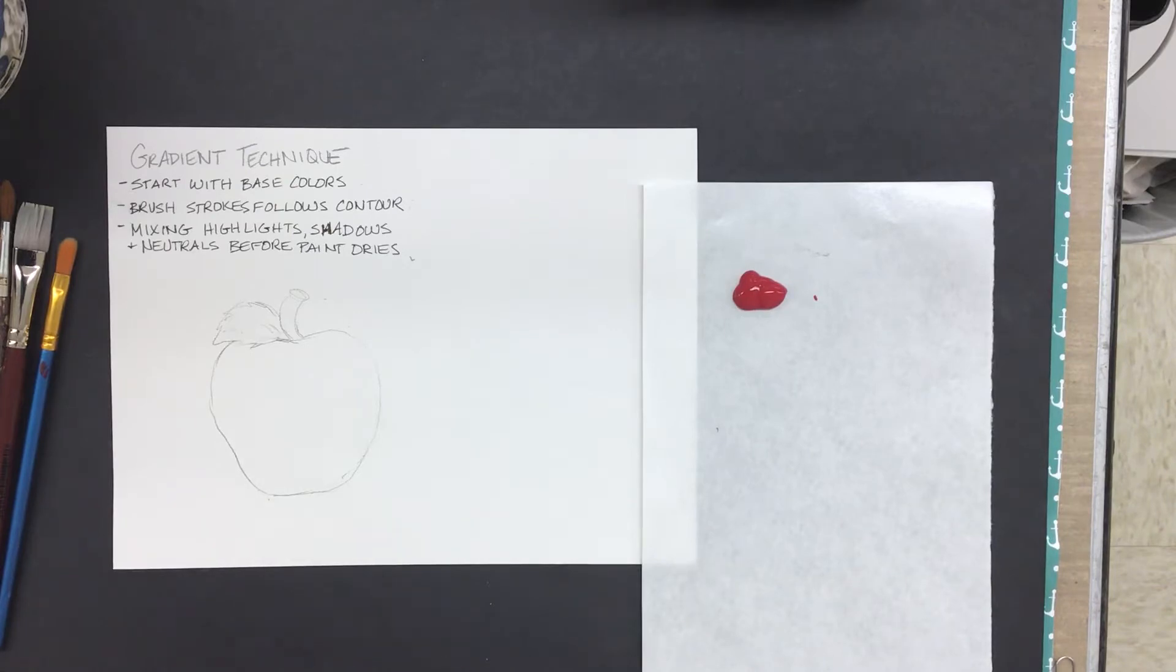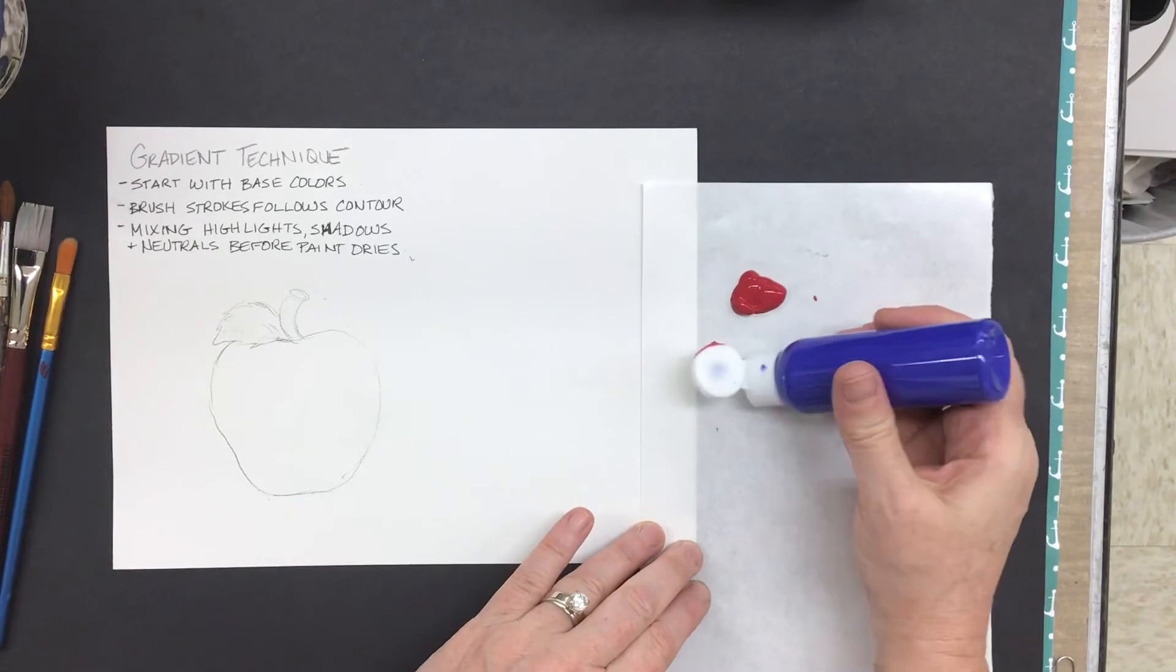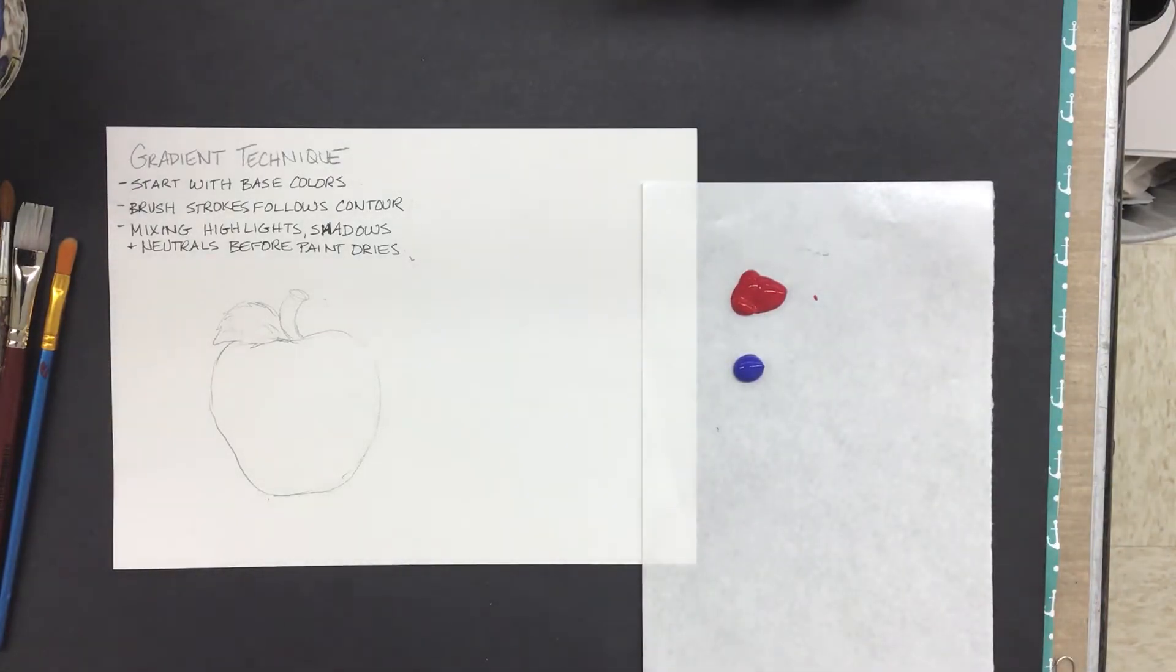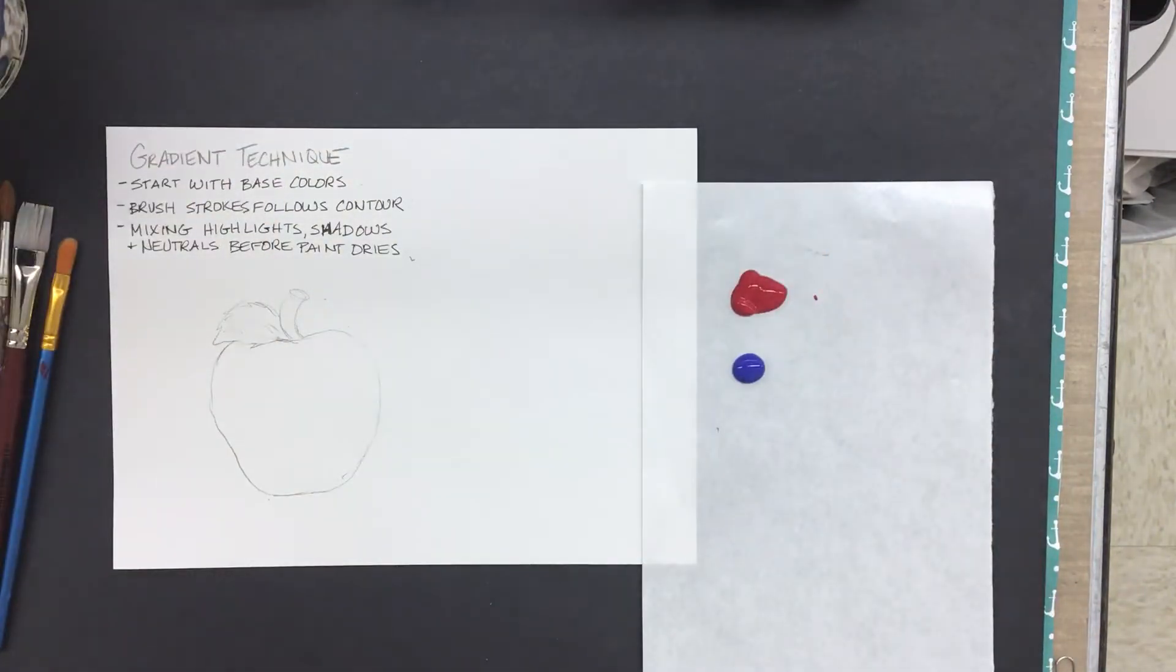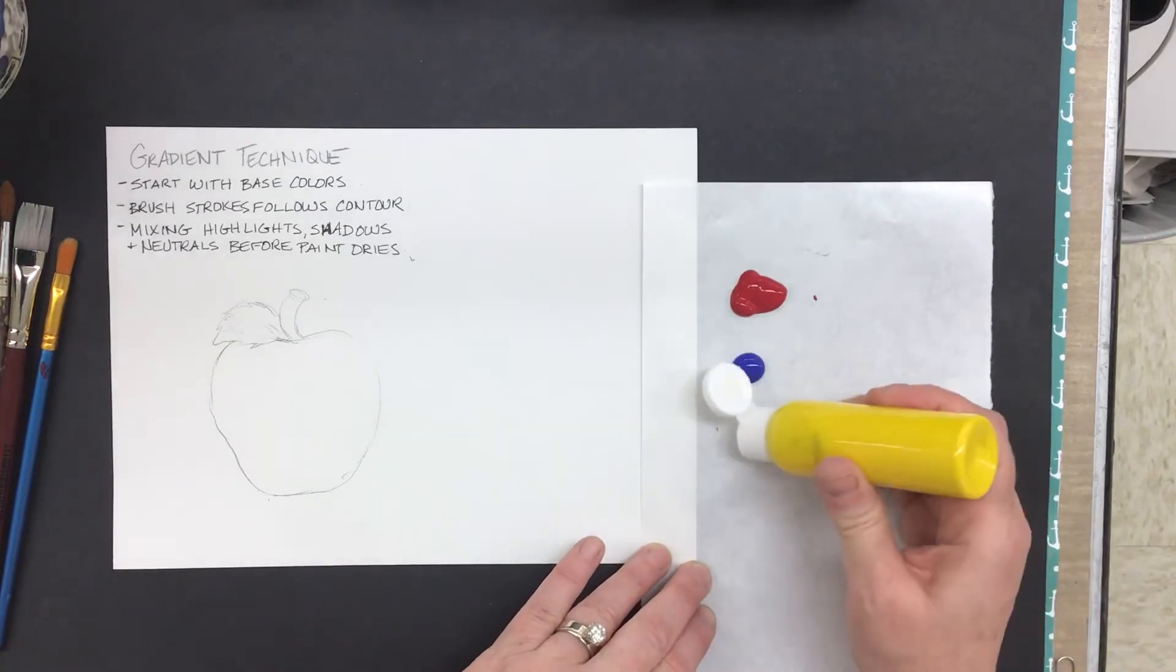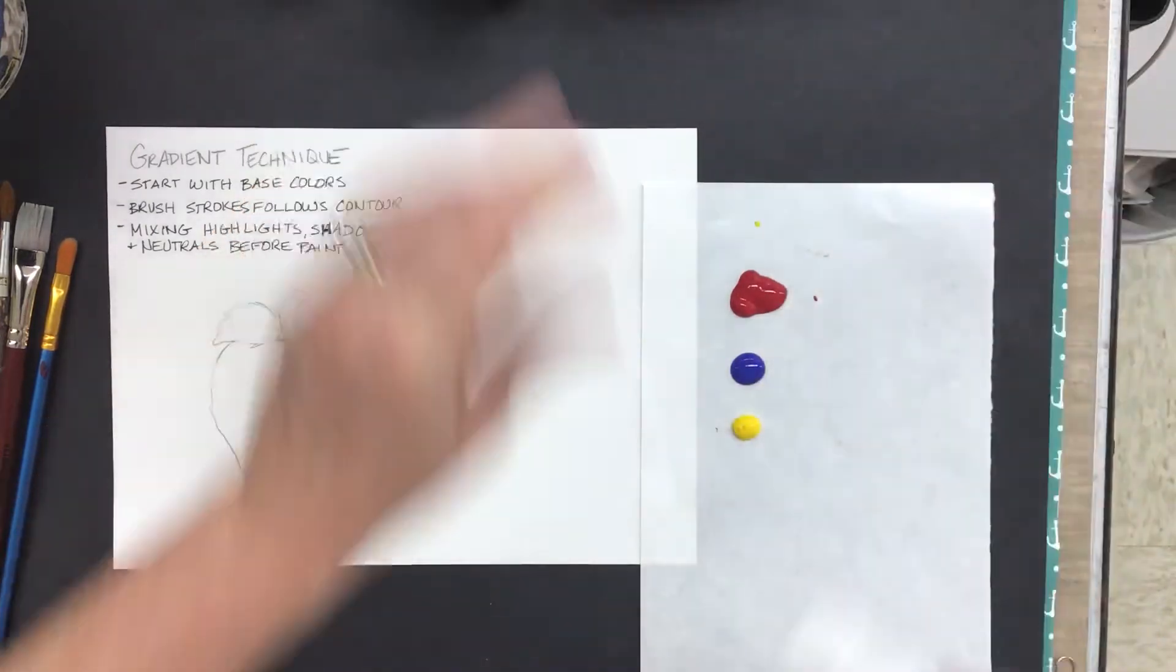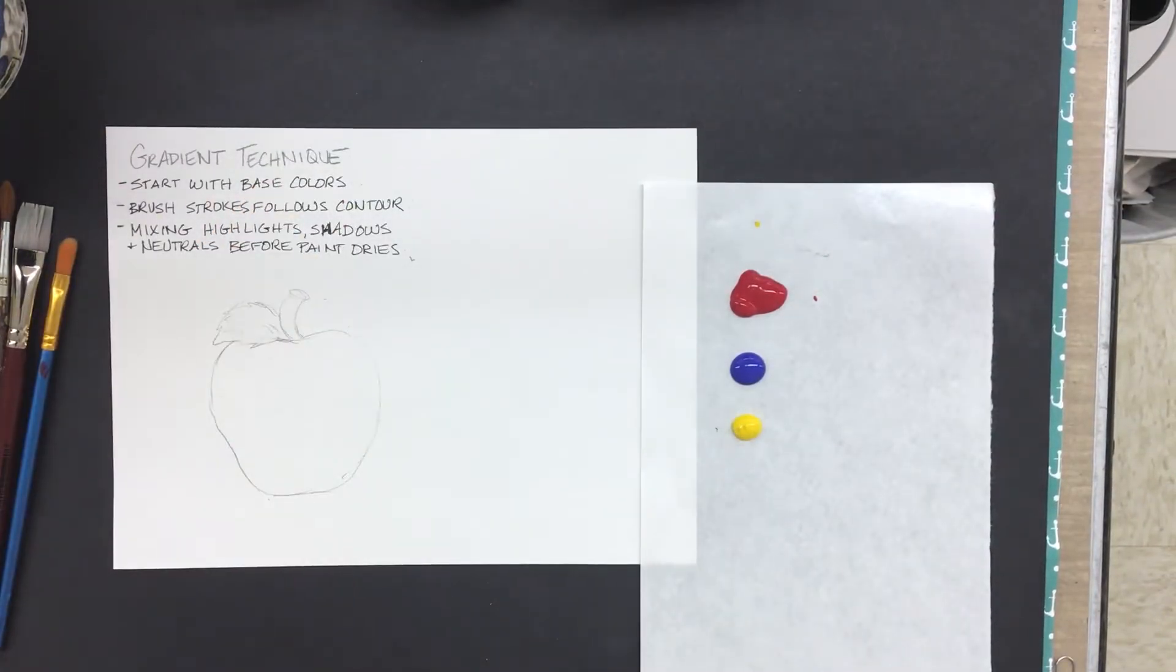I'm going to need some blue or some cool shadow, and it won't be much, so probably half as much blue, just a dab. Some yellow, and some white. So pause the video and get those four colors out and ready to use.